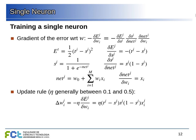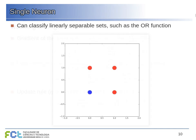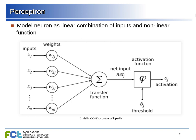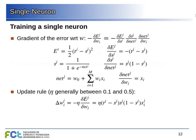This is similar to the perceptron rule but we now adjust weights according to the quadratic error function. To train the neuron and minimize this function we look at the gradient of the error function and go down that gradient — gradient descent, as we saw before. To compute the gradient of the error function with respect to the weights, we need to use the chain rule of derivatives, since the error is measured after the activation, between the activation and the target value.